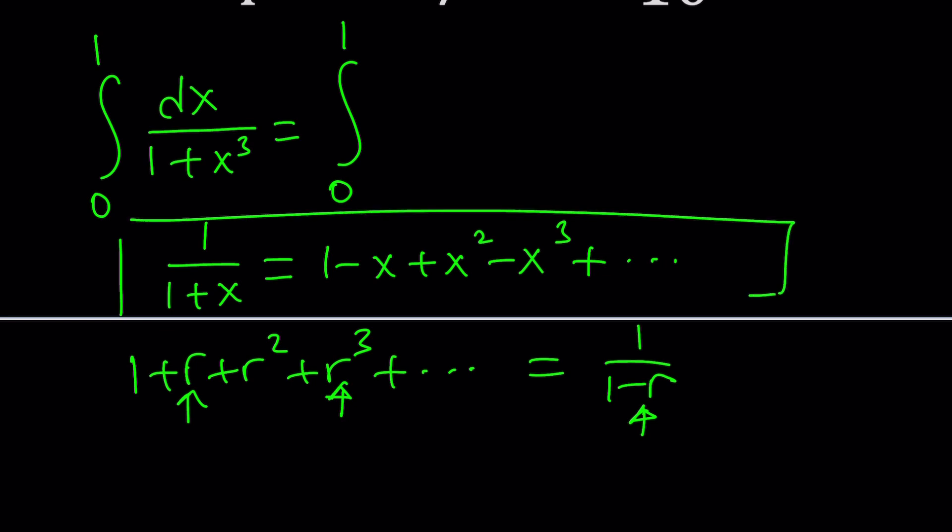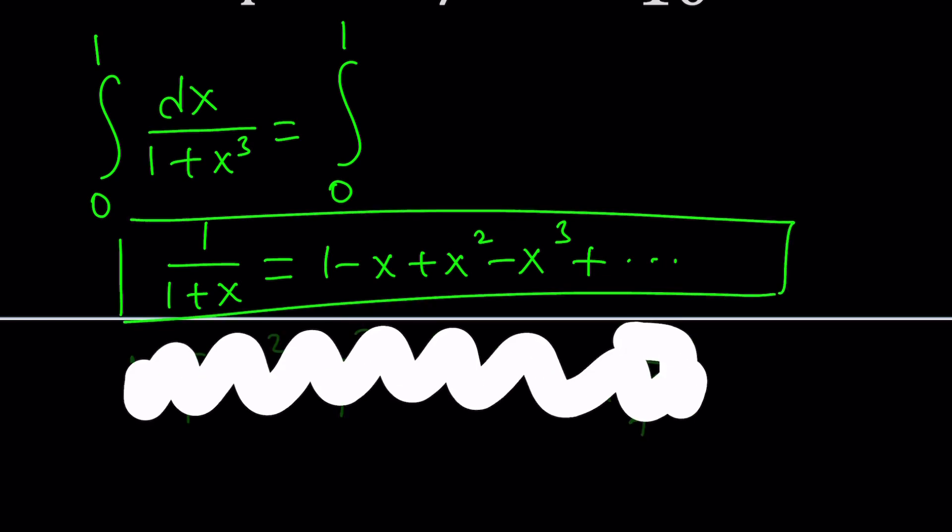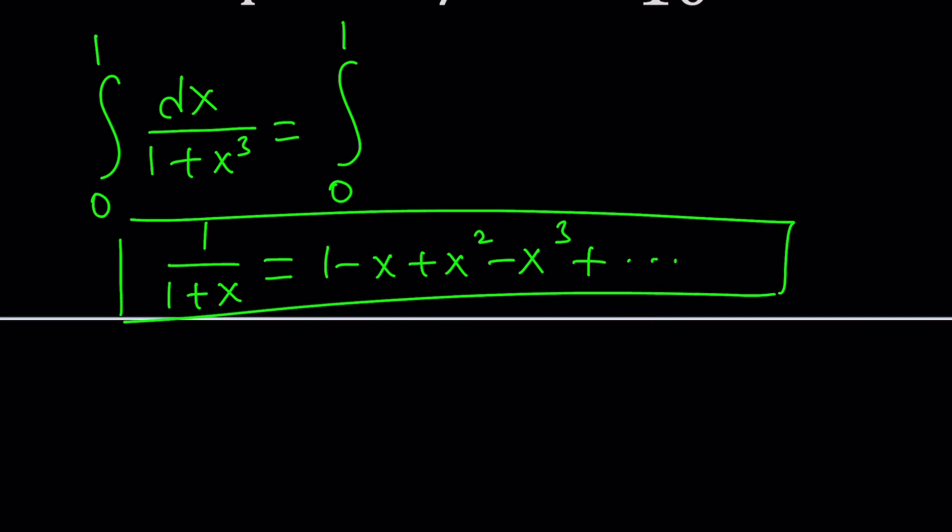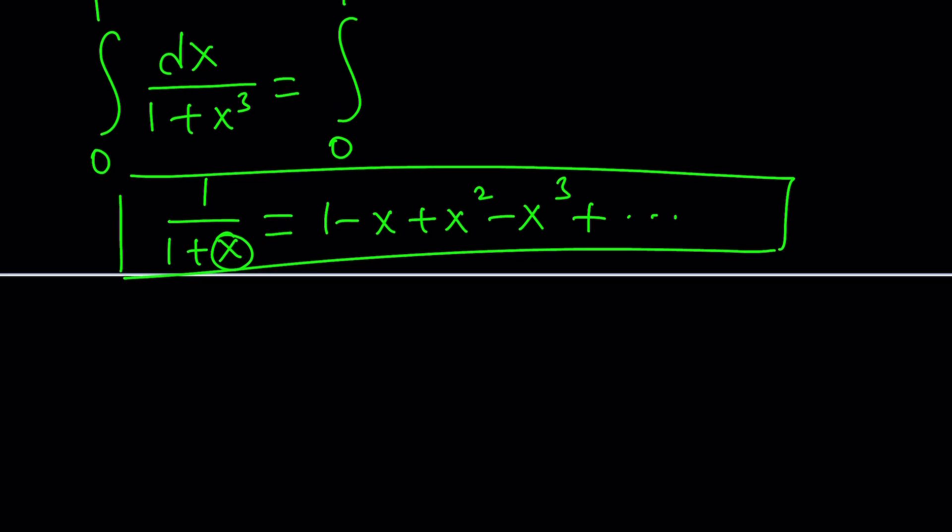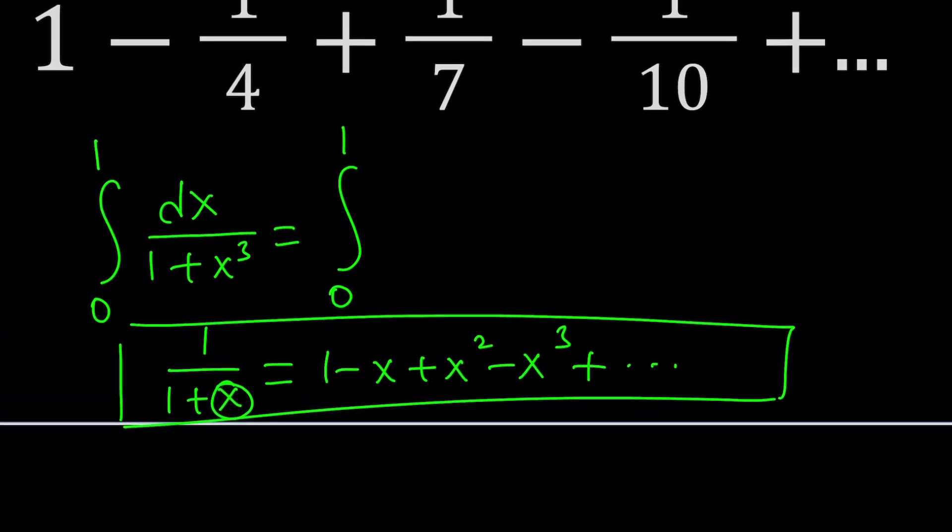But in this case, if you replace r with negative r, this also works because negative r is also going to be on that interval and you're going to be getting the alternations. Negative r, negative r³, so on and so forth. You get the idea? This is how I arrive at this. And we're going to do a little bit of mathematics to this to get the stuff that we want. I do need 1 over 1 plus x³. So can I replace x with x³? Absolutely.